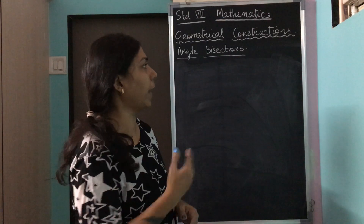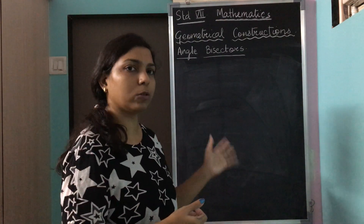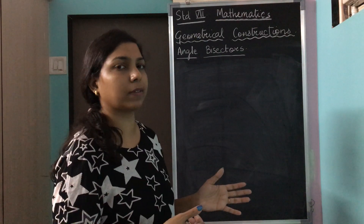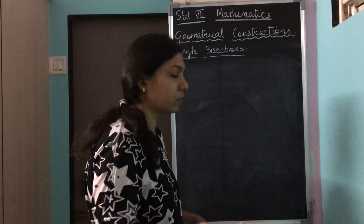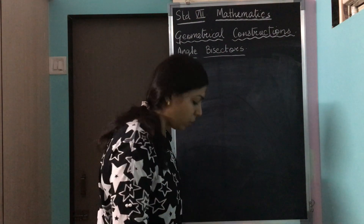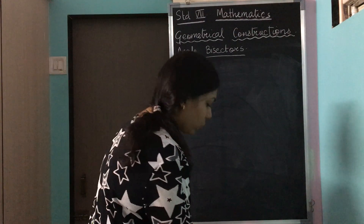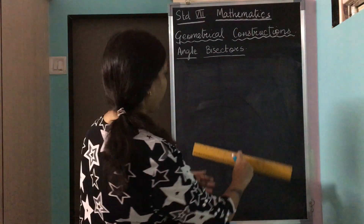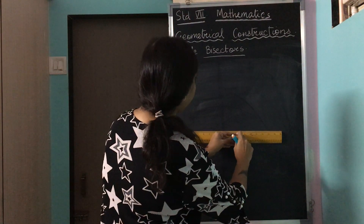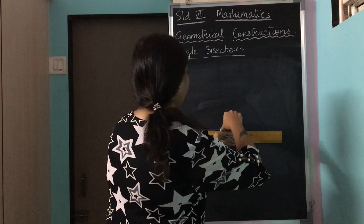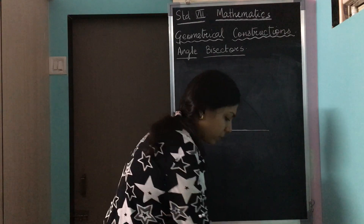Now let's move on to the next part, which is angle bisectors. How to draw angle bisectors — this is something you have already learnt. So let's quickly revise it. We can draw an angle; let's suppose we take an angle of 60 degrees.